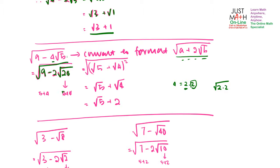Now 20 is actually 5 times 4, and 9 is actually 5 plus 4. So you get root of (root 5 plus root 4) squared. Remove the square to get root 5 plus root 4, which simplifies to root 5 plus 2.